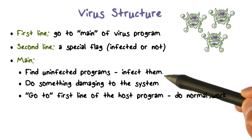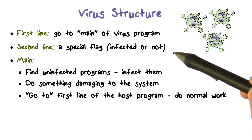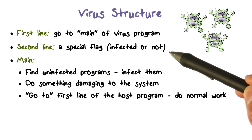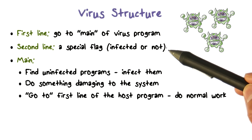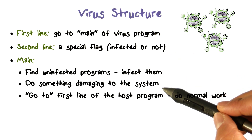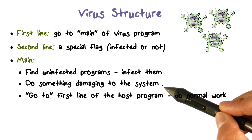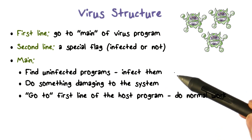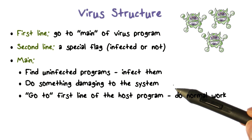When the virus code is run, it typically first finds other programs to infect. Of course, it will check whether a program has already been infected by looking at this special flag. In addition to infecting other programs, the virus code can also perform other malicious activities on the system, such as stealing valuable documents.